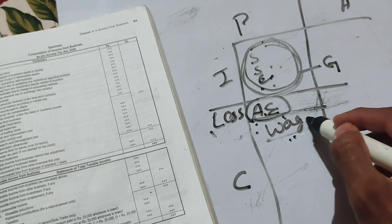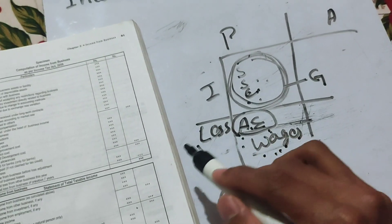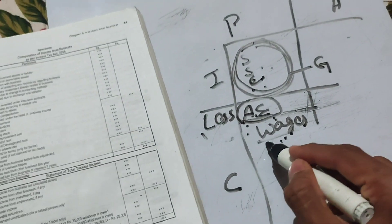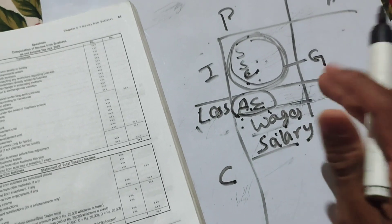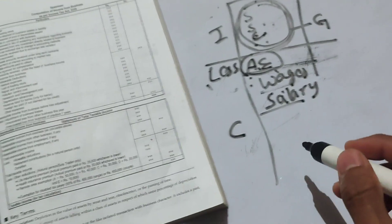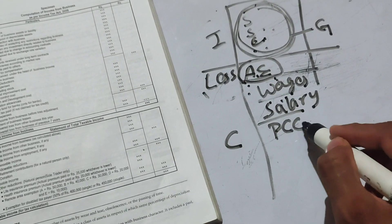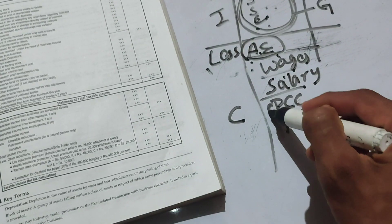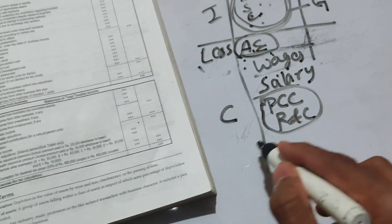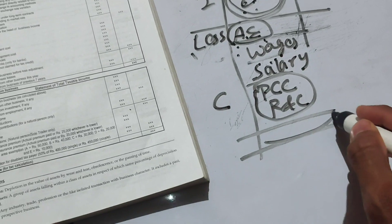For example, if a business produces goods, wages are admissible expenses that can be deducted. Similarly, staff salary is another admissible expense. Research and development cost is also deductible. Following all these rules, we arrive at accessible income from business or profession.